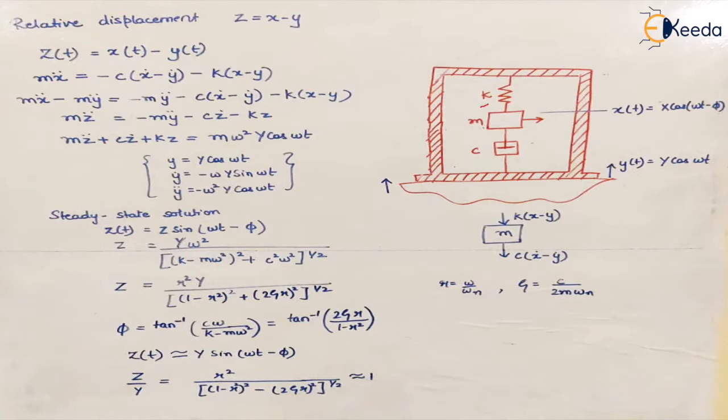The mass with a spring and damper has displacement as a function of time denoted by x, and the movement of the base connected to the vibrating body is given by displacement y, which is again a function of time t. We are talking about the relative displacement, denoted by z, which is x minus y. The velocity will be x dot minus y dot, and acceleration will be x double dot minus y double dot.